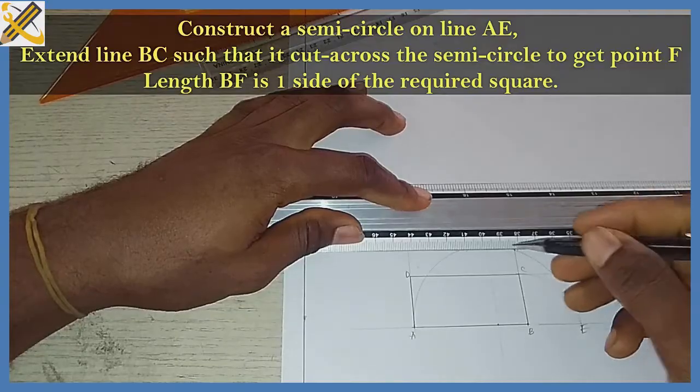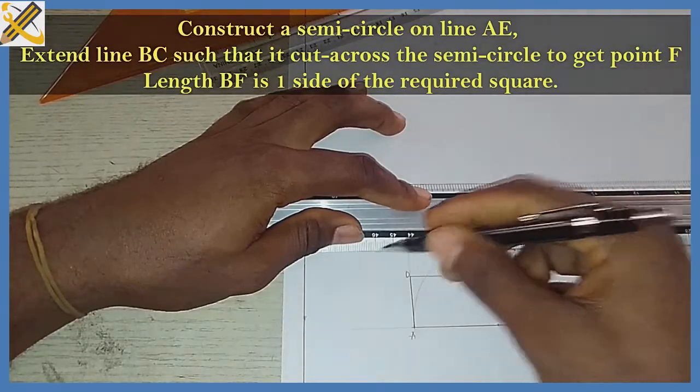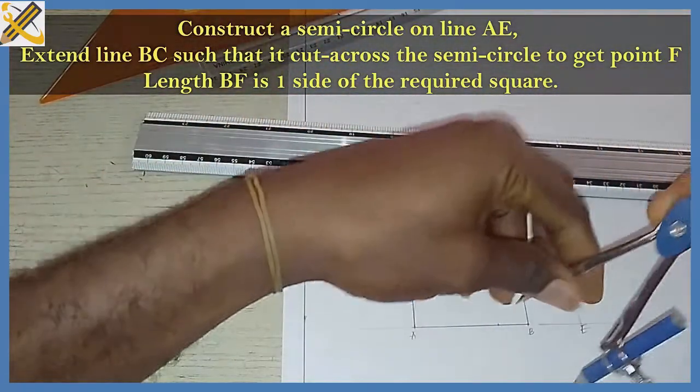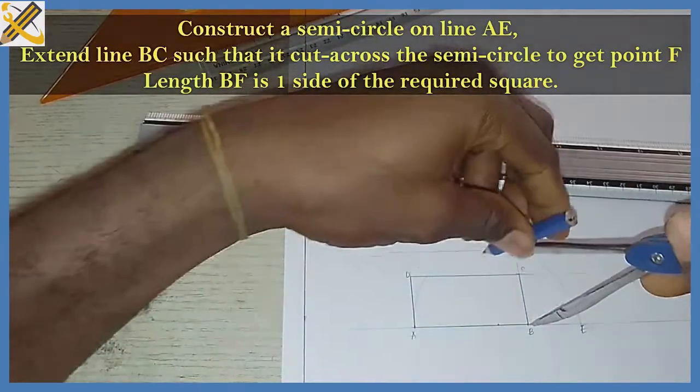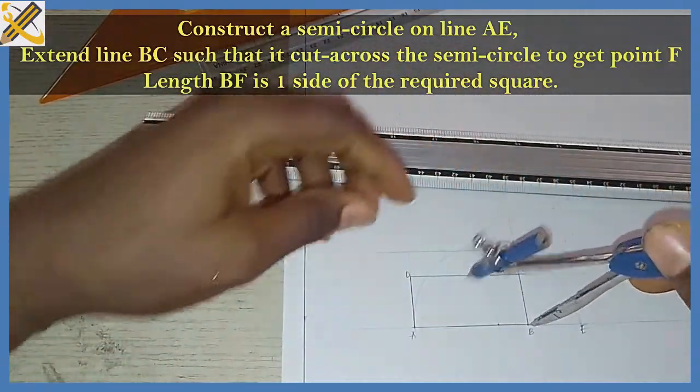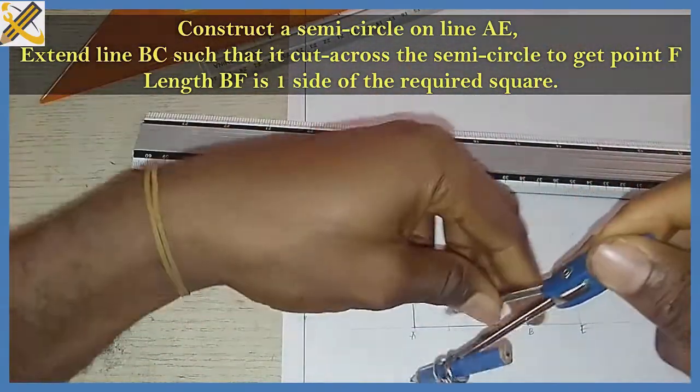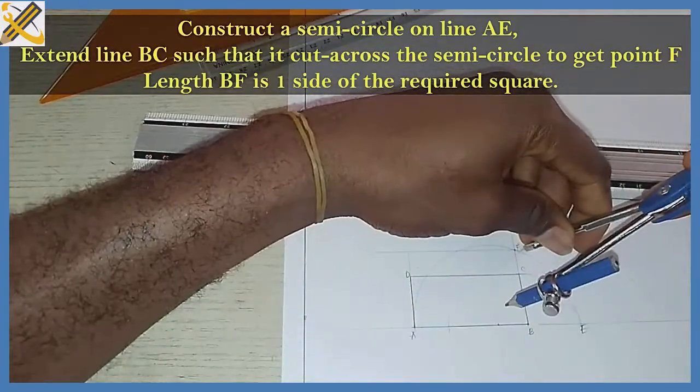From point F, let me do it towards this area, extend a line here. I'm going to pick my compass, measure radius BF, which is this, and strike it here.